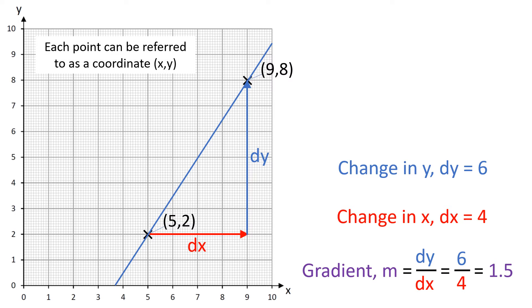Now each of these points can also be referred to as a coordinate, an xy coordinate, and we could use those coordinates to find dy and dx without actually having to draw the graph. We can recognize they're xy points and we can see we need to go plus 4 to go from 5 to 9, so that gives us our dx, and we need to go plus 6 to go from 2 to 8, so that gives us the dy.